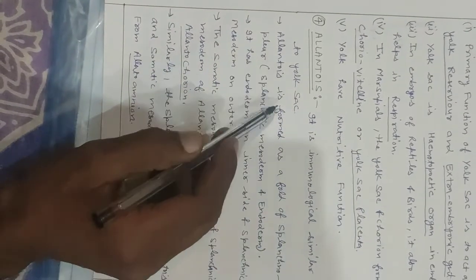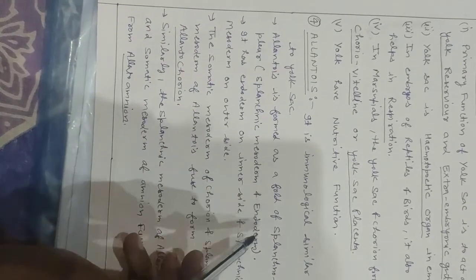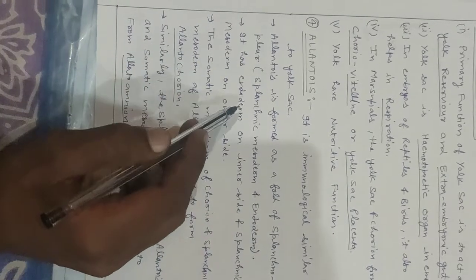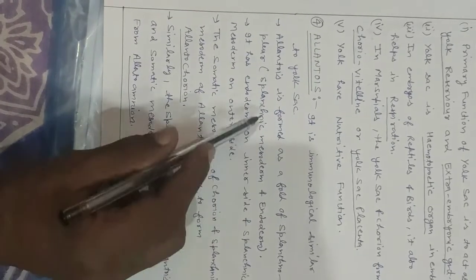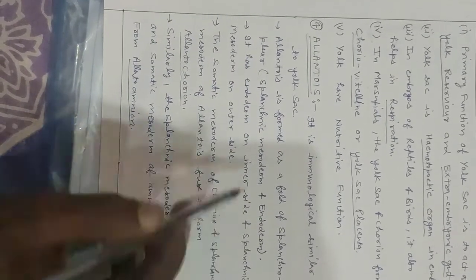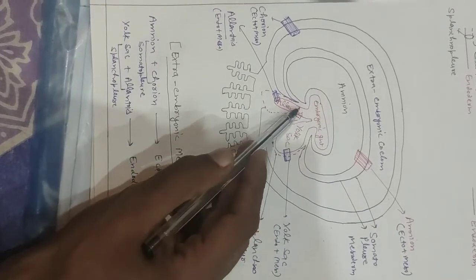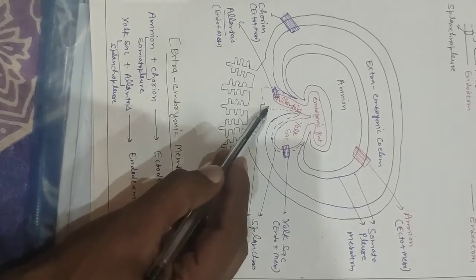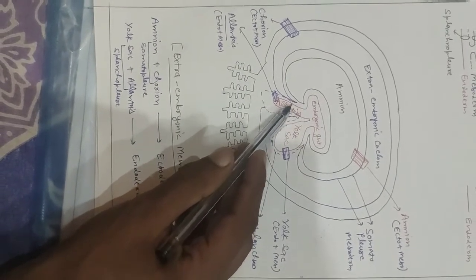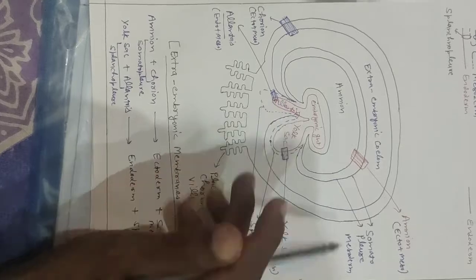The allantois is formed as a fold of splanchnopleure, meaning splanchnic mesoderm and endoderm. It has endoderm on the inner side and splanchnic mesoderm on the outer side. In the diagram of the human extra-embryonic membranes, the red color line represents endoderm and the dotted blue line represents splanchnic mesoderm.